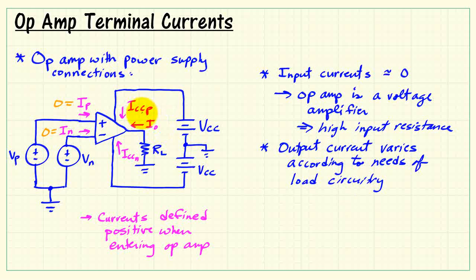The output current varies according to the needs of the load circuitry. According to the way IO, or the output current, is defined, we can say that the output current is minus the output voltage, VO, divided by the load resistance.